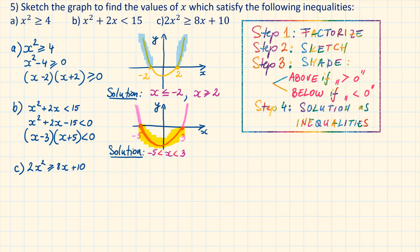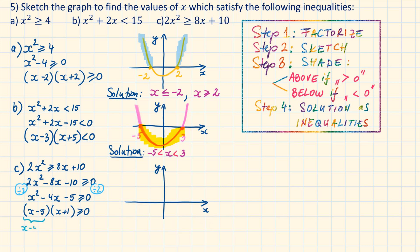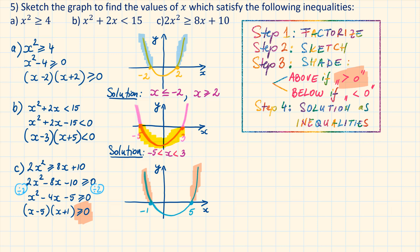Part C: we subtract 8x and subtract 10 to get everything on one side with 0 on the other. To simplify, we divide across by 2. The factorized form is (x minus 5)(x plus 1). The two x-intercepts are 5 and minus 1. The symbol larger or equal to 0 represents above the graph, giving a two-part solution: x is less than or equal to minus 1 and x is larger than or equal to 5.